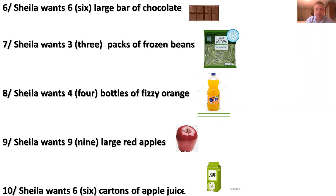Number eight: Sheila wants four bottles of fizzy orange. I'm using the example of a bottle of Fanta because you know that one. Fizzy orange is when you drink and the bubbles make something in your mouth — fizzy orange or fizzy strawberry, it depends what you drink. Number nine: Sheila wants nine large red apples. You have green apples, yellow apples, and red apples — this is a large red apple.